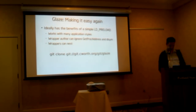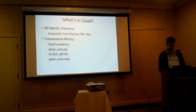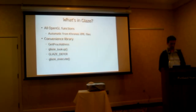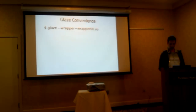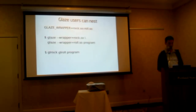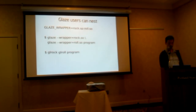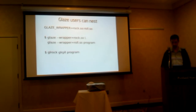So we automatically take from the Khronos XML files all the symbols. We have all the convenience to make this pretty easy from the wrapper author's point of view. The painful way to use Glaze is with all the environment variables; the easier way is to use the little command-line program. Here are three different ways to do nesting with Glaze: specify multiple .so files in the GLAZE_WRAPPER environment variable, call the glaze program multiple times, or call the various programs if they're using glaze_execute themselves.